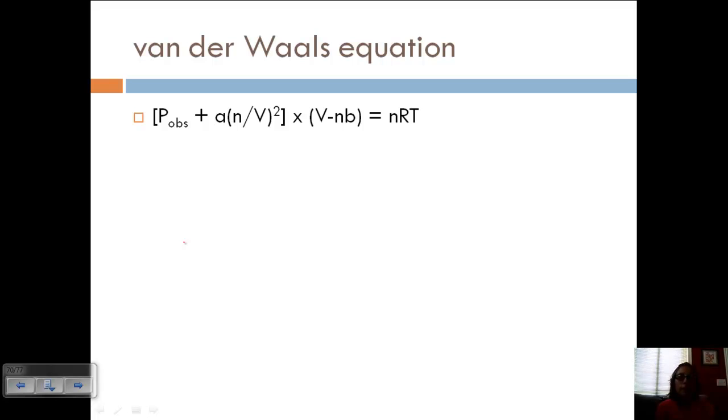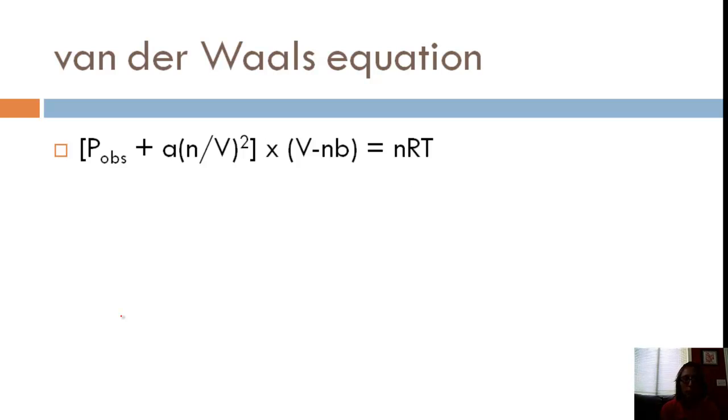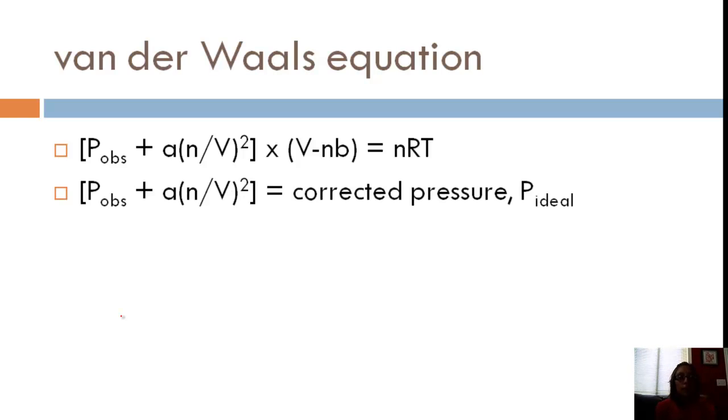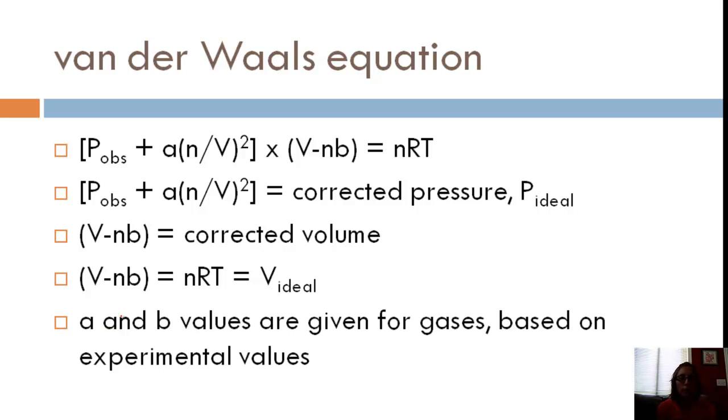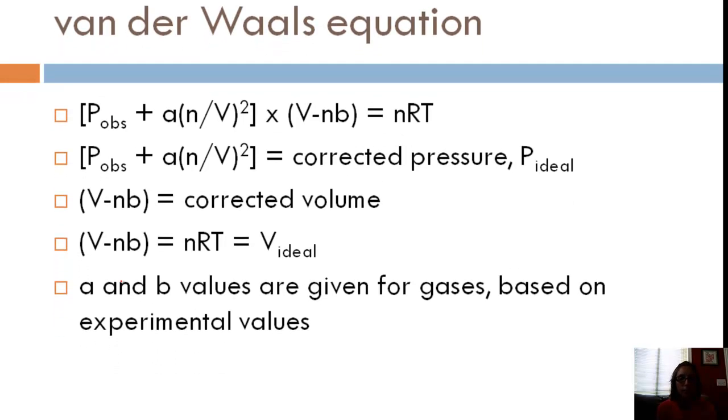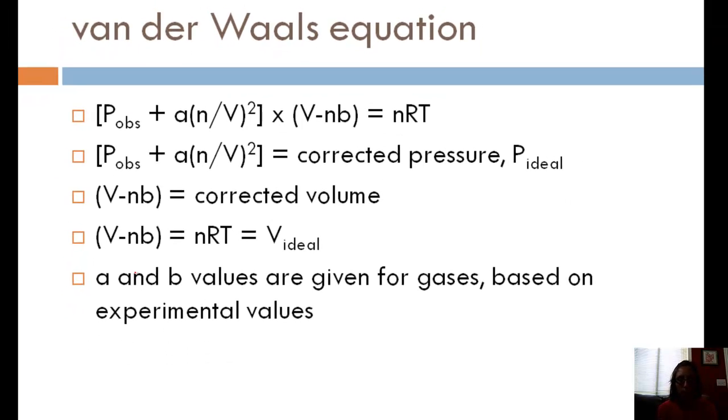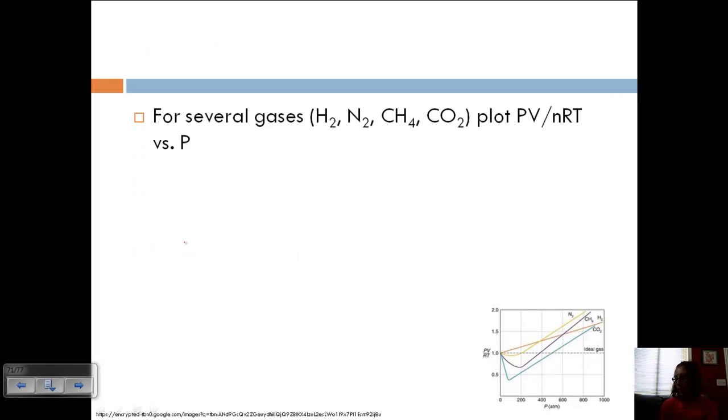And so basically this, if we rearrange it, this gives us what's called the Van der Waals equation. So there it is. I won't read it for you. So we've got different parts that are correcting for certain variables. And so we've got that entire first part is correcting for the pressure to give us the ideal pressure. And then the second part is correcting for the volume to give us an ideal volume. And so A and B values are given for different gases and they're based on experimental values. And like I said, they're in any textbook and you can just look them up.